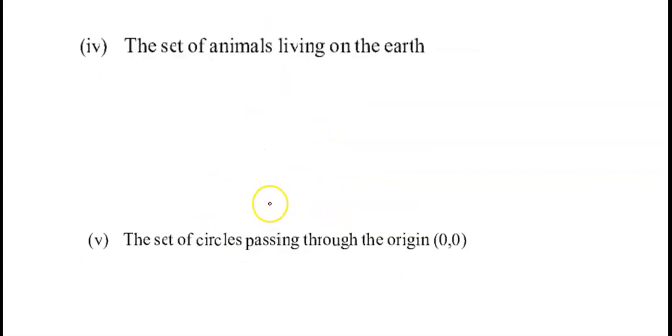Set of animals living on the earth. The animals living on earth are fixed. We can say the variety of animals is fixed, so this set is a finite set.